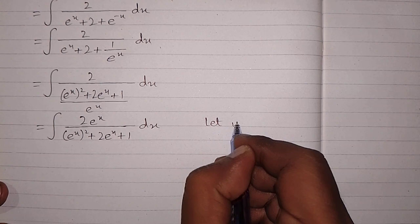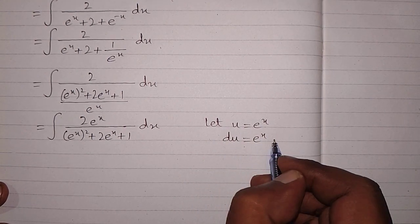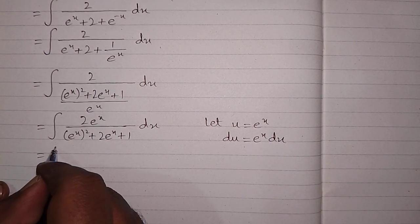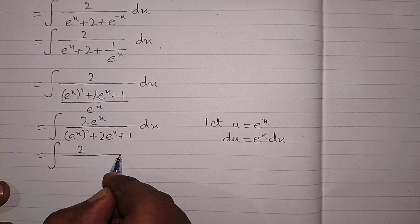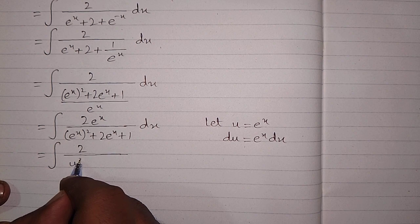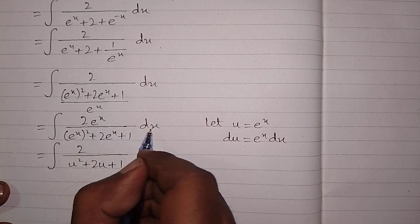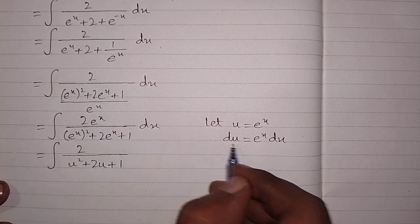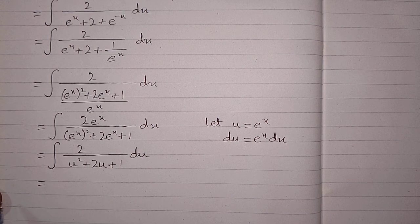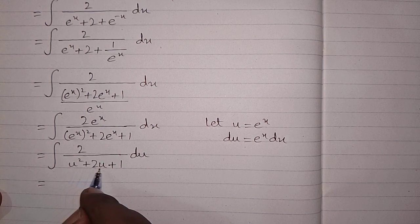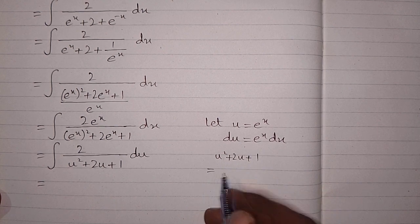Now let u equal e to the power x. So the differential du is equal to e to the power x dx. This integral can be written as 2 upon — in place of e to the power x we put u — so we have u squared plus 2u plus 1, and in place of e to the power x dx we write du.